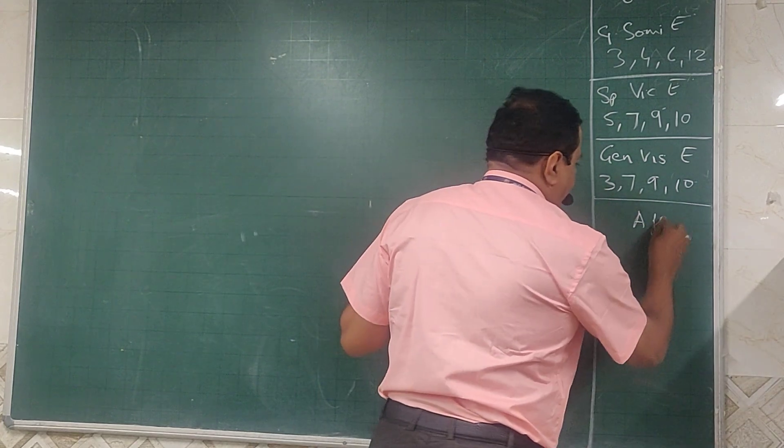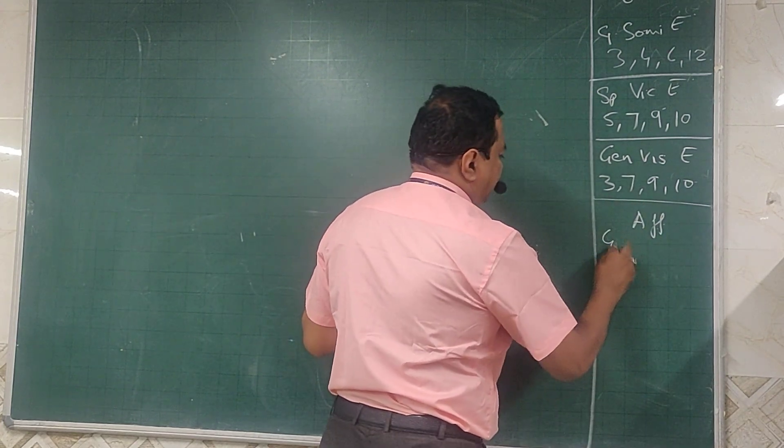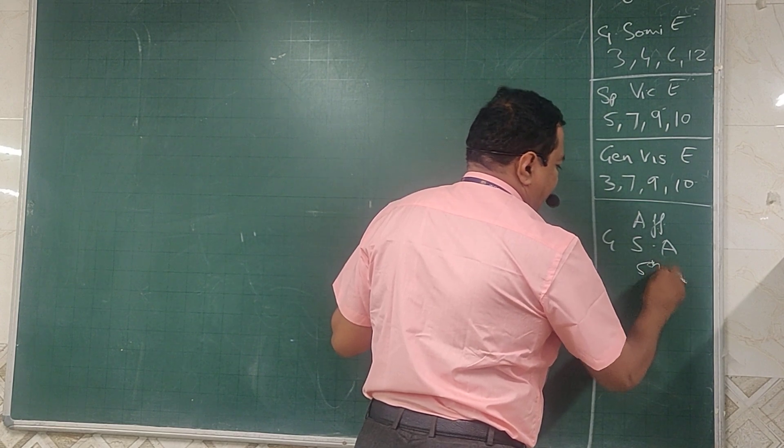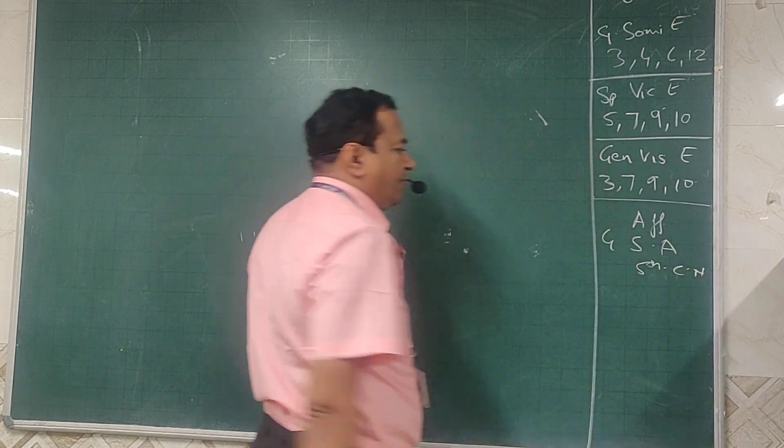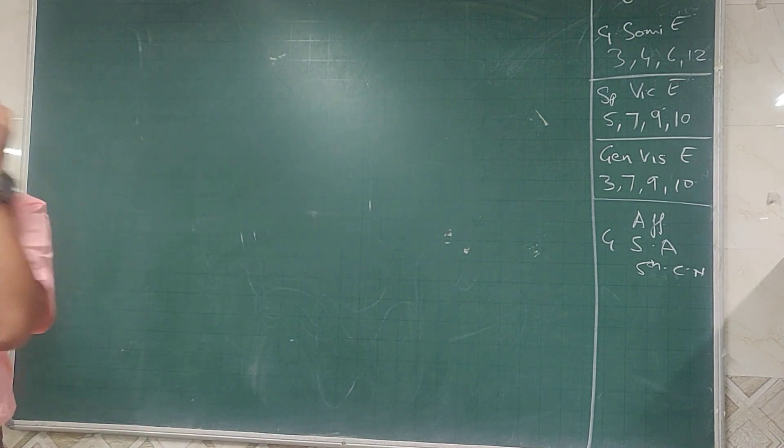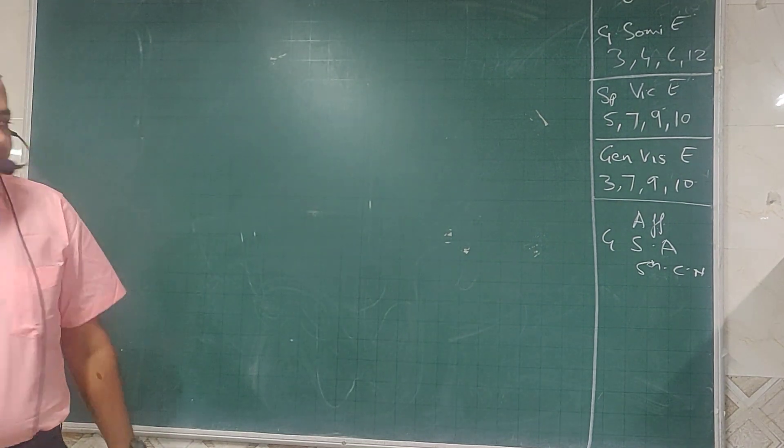The afferent components, general somatic afferent. This is for the fifth cranial nerve, all skin sensations, proprioception.